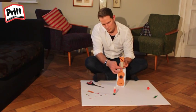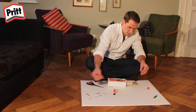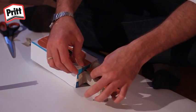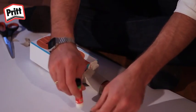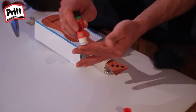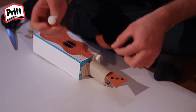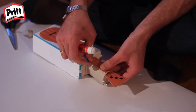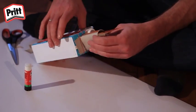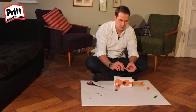Dit lelijke bruine gedeelte kunnen we mooier maken door het plaatje van de frets op te lijmen. Zo ziet het er al veel beter uit.